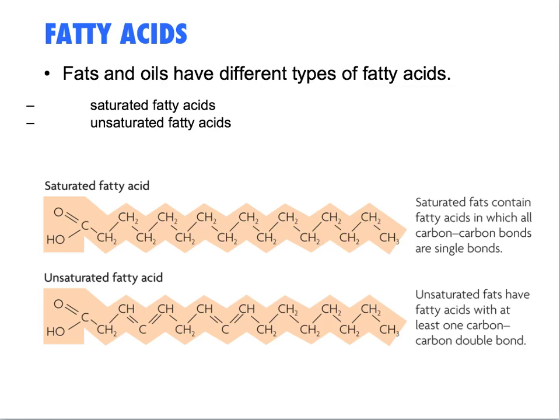Saturated fatty acids have all carbon-carbon single bonds. For unsaturated fatty acids, there's at least one, but often more, carbon-carbon double bonds — meaning the fat could carry more hydrogen. So saturated versus unsaturated has to do with the number of hydrogens on the chain. If it's saturated, it's got the maximum number; if it's unsaturated, it has less than the maximum, with at least one double bond.